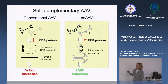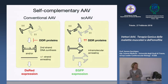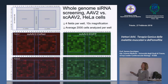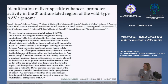La domanda era se gli stessi geni cellulari che condizionano la permissività ai vettori normali funzionassero anche con i vettori self-complementary. I risultati degli screening sono molto simili per i due tipi di vettori, per cui virtualmente gli stessi geni che favoriscono il processamento dell'AAV wild type favoriscono anche l'espressione dei vettori self-complementary. Rimane ancora abbastanza oscuro il ruolo di tutti questi geni cellulari nel modulare la permissività ad AAV.